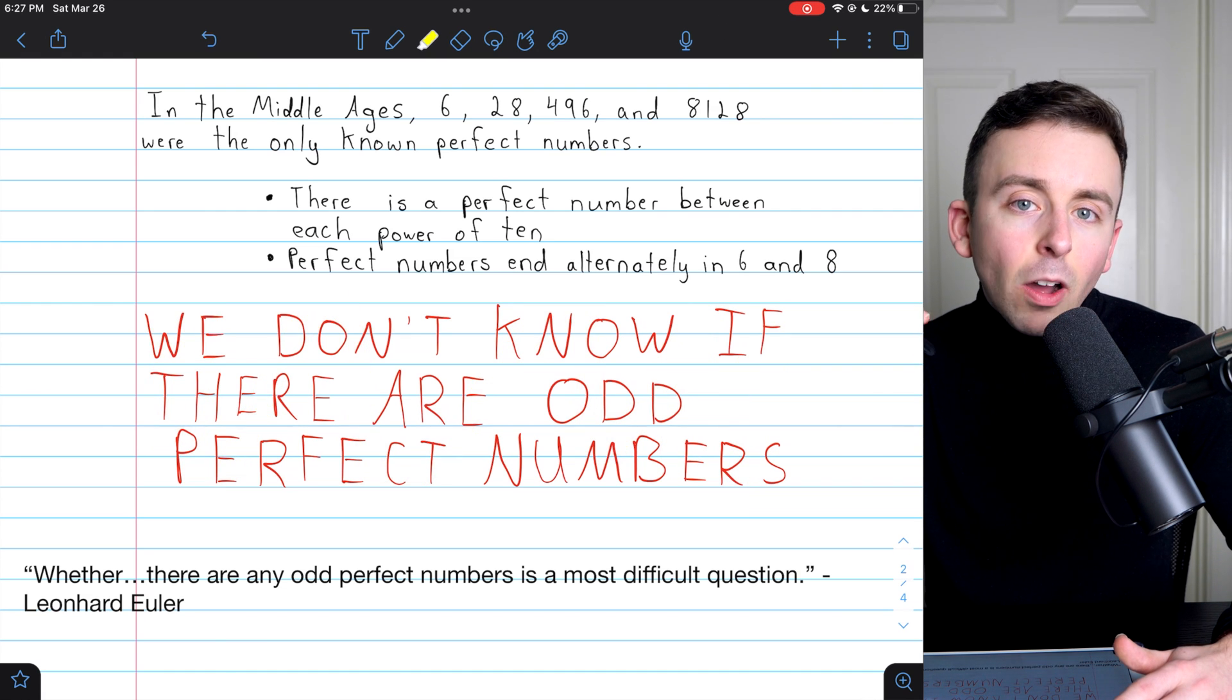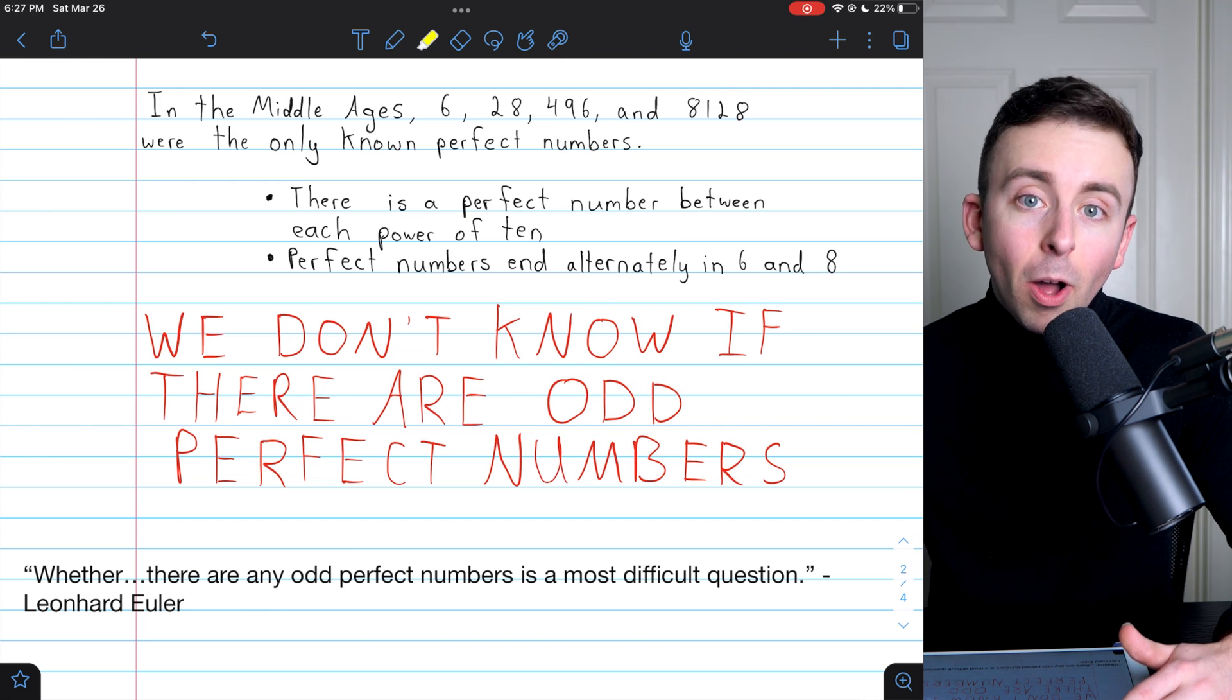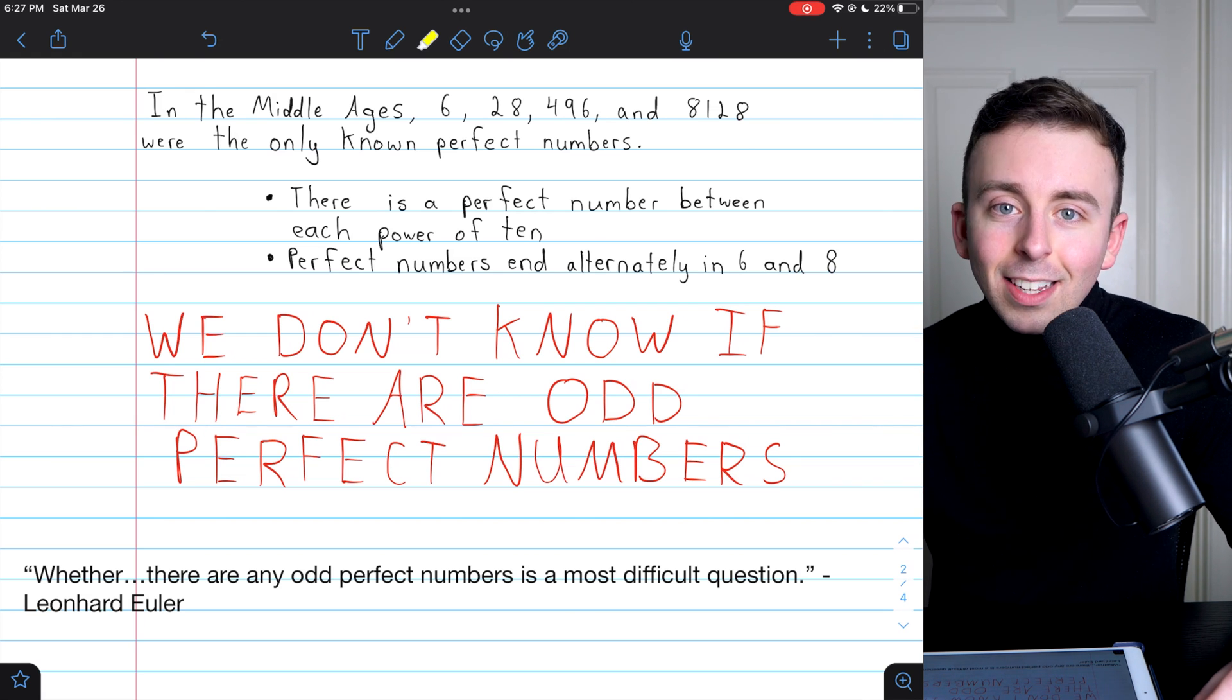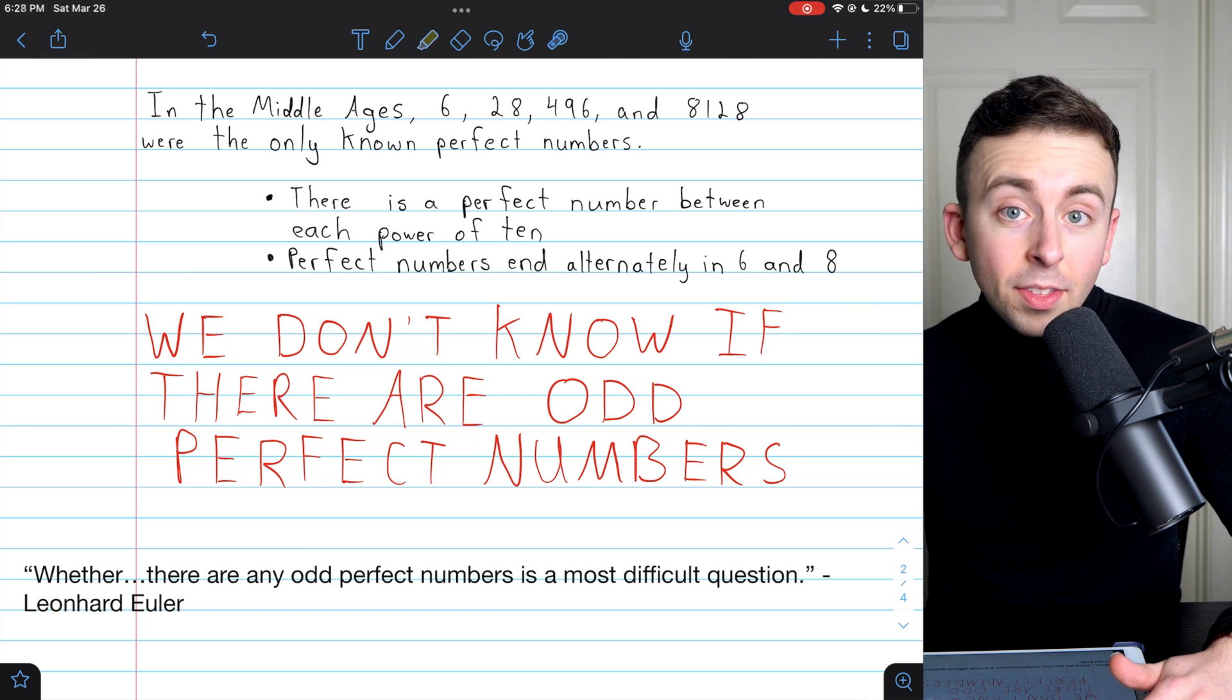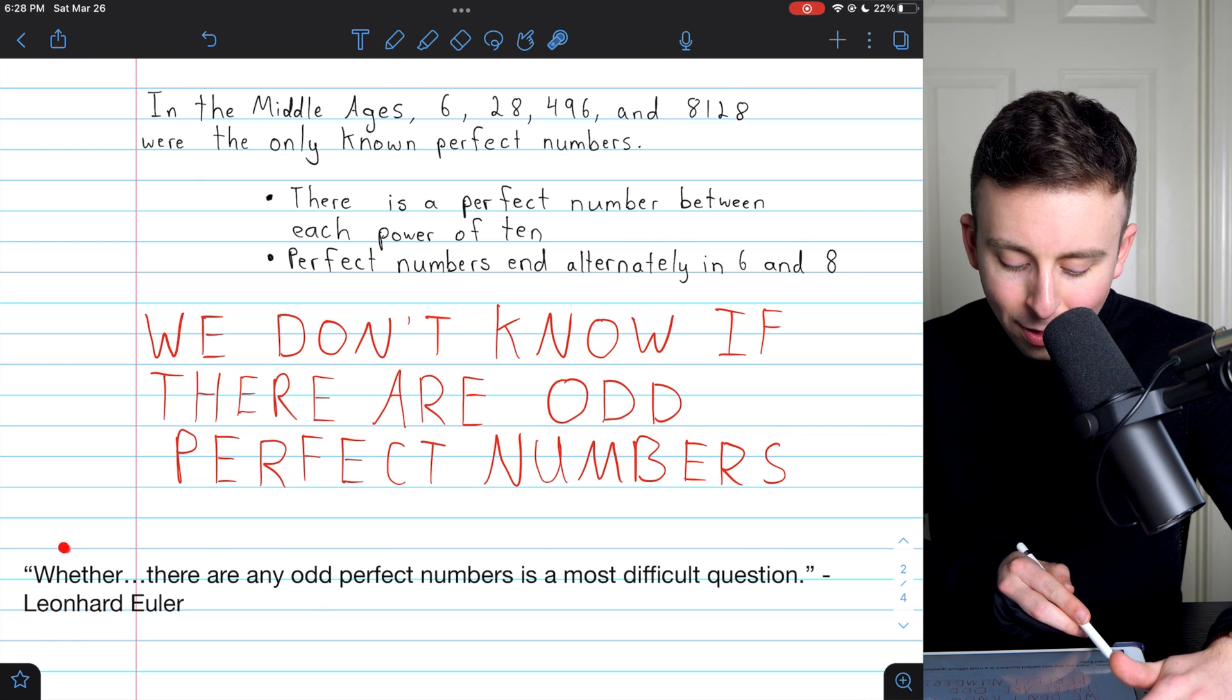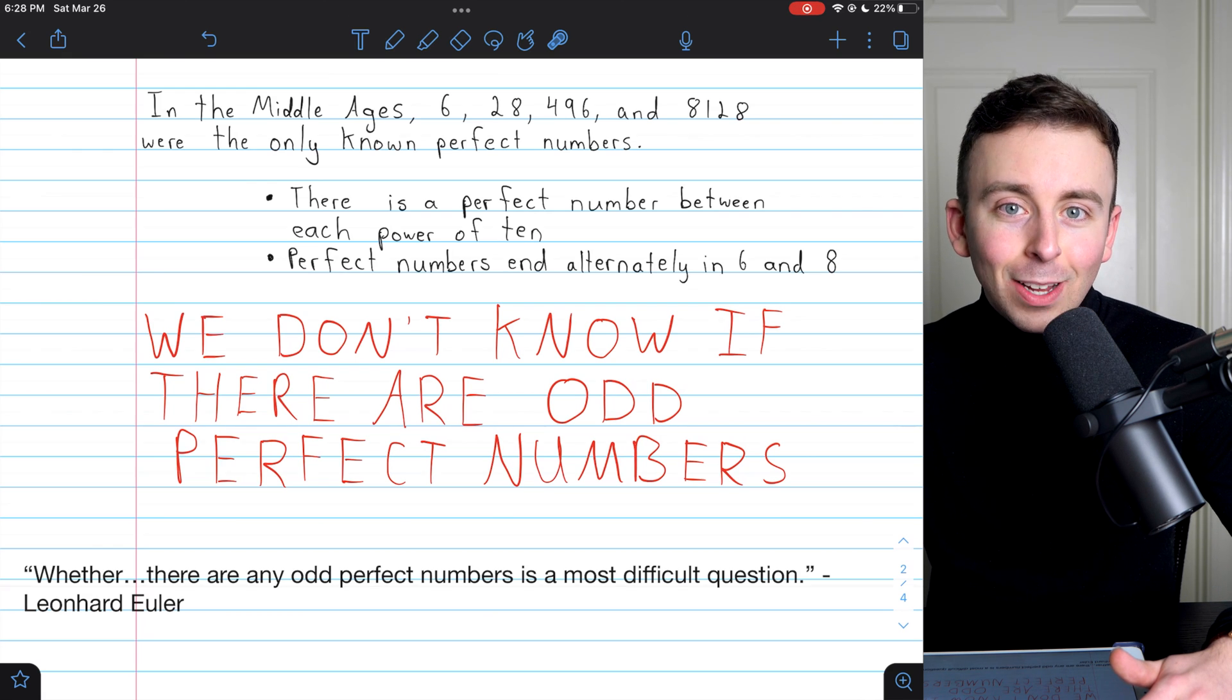We don't know if there are odd perfect numbers. Are they all even or not? We don't know. We do know that all even perfect numbers will end in 6 or 8, but as we saw, they don't alternate between 6 and 8. But all even perfect numbers do end in 6 or 8. As far as the odd perfect numbers go, we don't know if they even exist. On this matter, my favorite mathematician Leonard Euler said, whether there are any odd perfect numbers is a most difficult question, which I suppose has proven to be very accurate. It is a hard question.